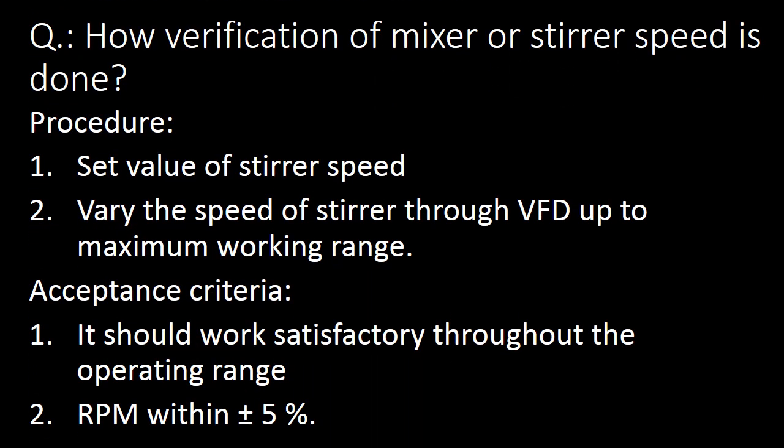Another important question: how is verification of mixer or stirrer speed done? The procedure is: set the value of stirrer speed and vary the speed through a VFD up to the maximum working range. The acceptance criteria is that the stirrer should work satisfactorily throughout the operating range and RPM shall vary within 5%.